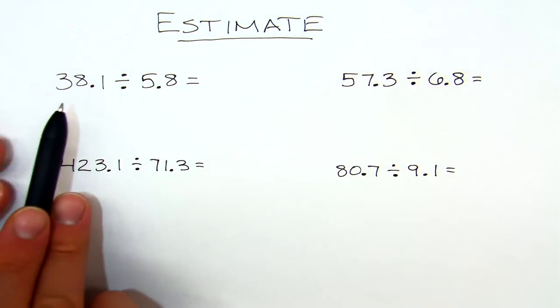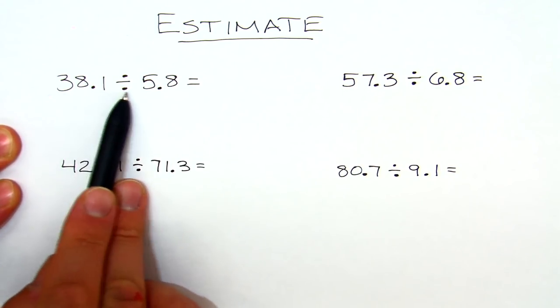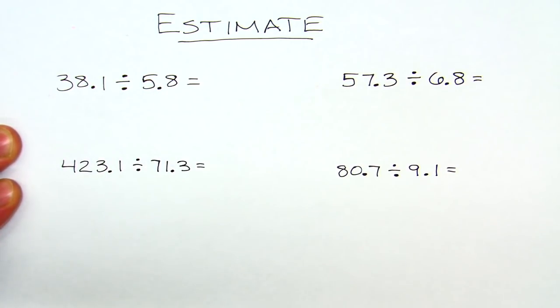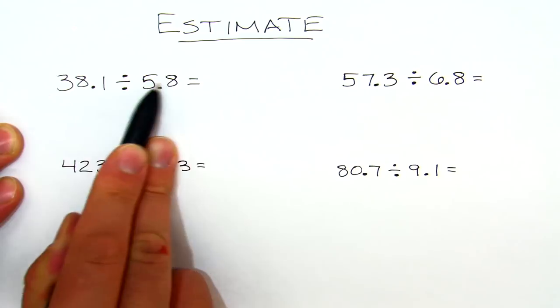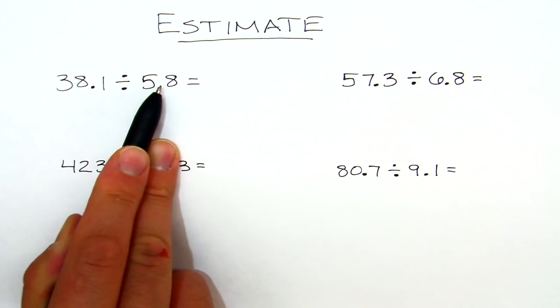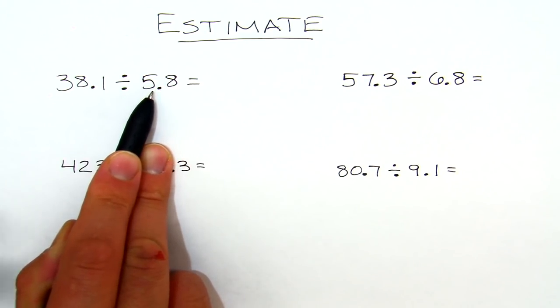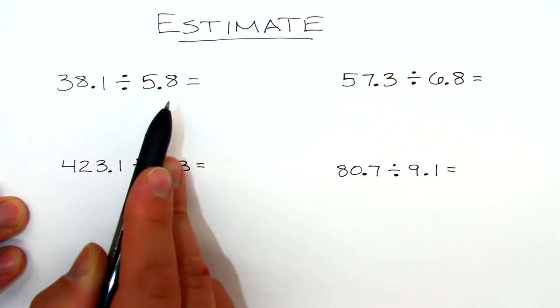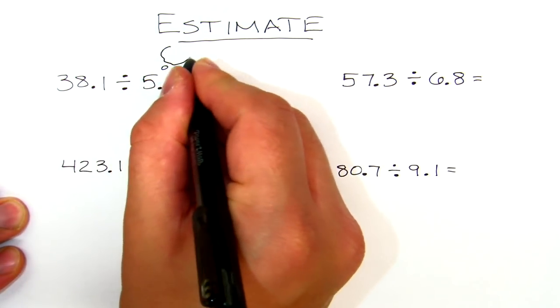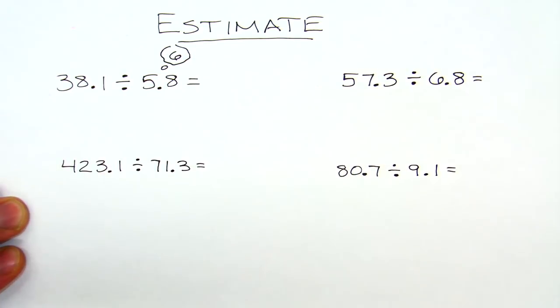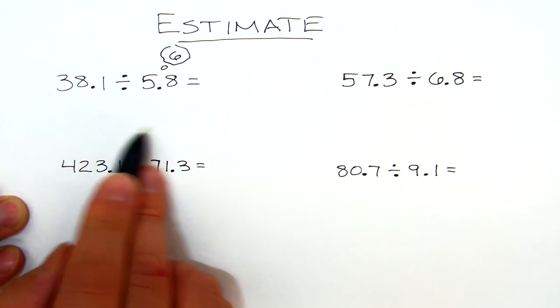In this first one, 38.1 divided by 5.8, my suggestion is to always round this divisor. So in this one, 5.8 is very close - I'm gonna draw my little thought bubble here - is very close to 6, so I'm gonna think of 6. Now I'm writing these down...